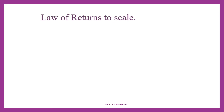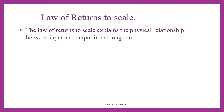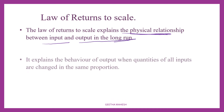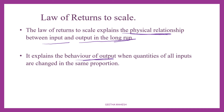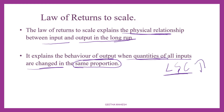Now let us discuss the law of returns to scale in detail. The law of returns to scale explains the physical relationship between input and output in the long run. It explains the behavior of output when the quantity of all inputs are changed in the same proportion. Here, factors of production — labor and capital — are increased in the same proportion, and then output also changes.